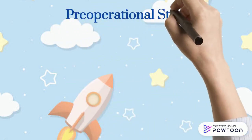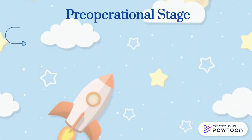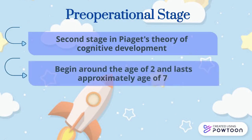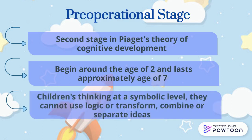Pre-operational stage is the second stage in Piaget's theory of cognitive development. This stage begins around the age of 2 as children start to talk and lasts until approximately age 7. During this period, children are thinking at a symbolic level but not yet using cognitive operations. This means the child cannot use logic or transform, combine, or separate ideas.